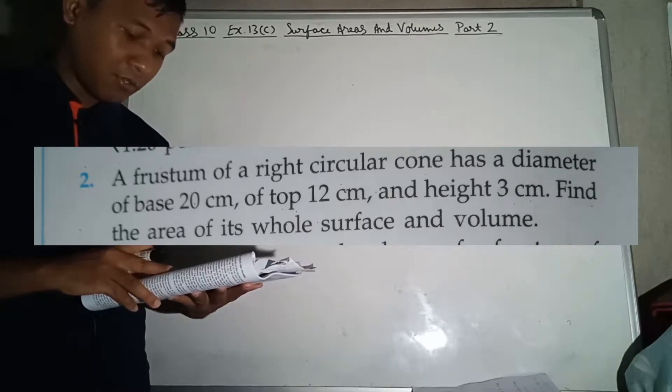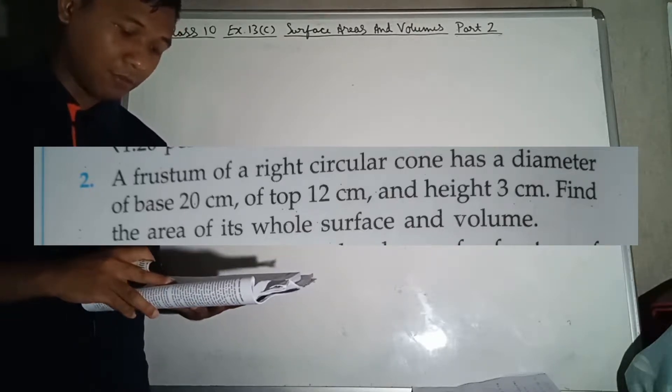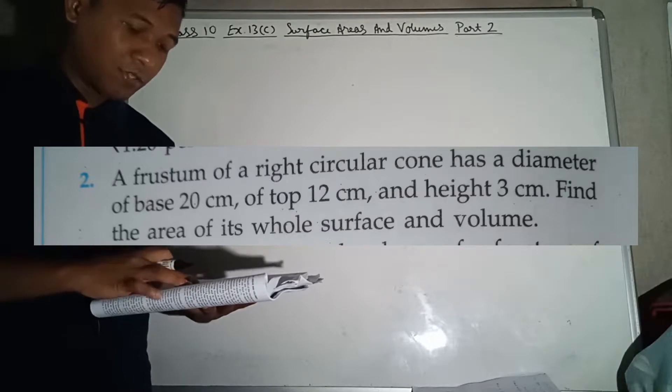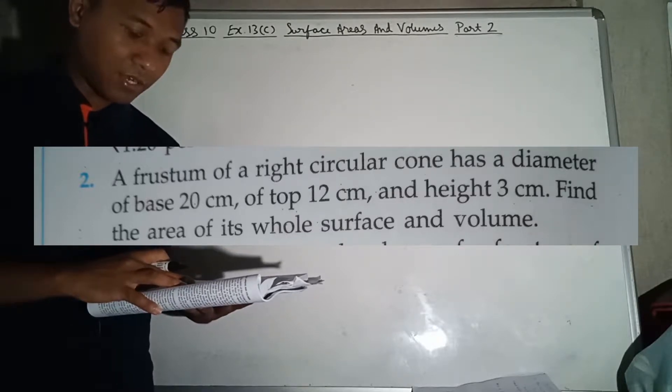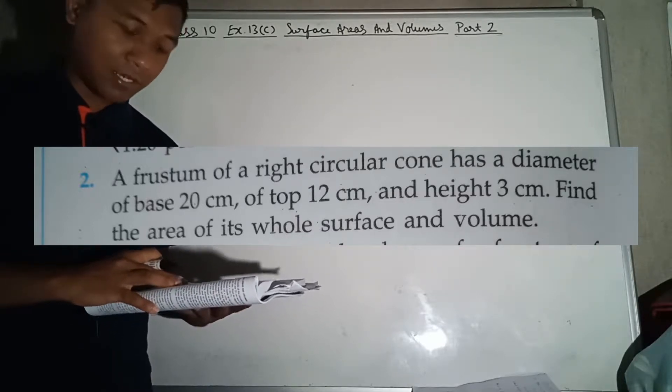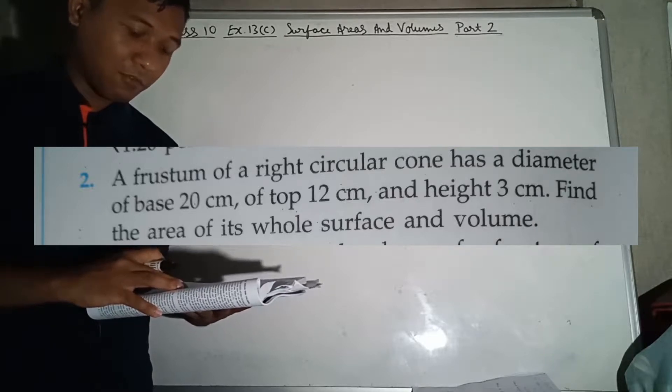Find the area of its whole surface and volume. Area of its whole surface means total surface area of the frustum and volume.